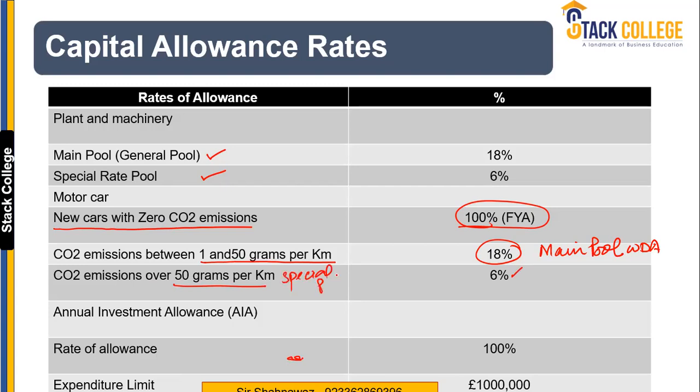So you have to segregate cars into three categories: those with zero CO2 emission, those with 1 to 50 grams per kilometre, and those with more than 50 grams per kilometre. The Annual Investment Allowance limit is 100% up to £1 million.